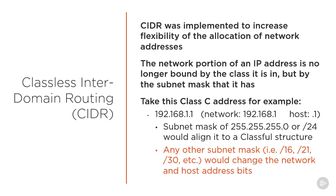Any other subnet mask, such as /16, /21, /30, or anything else, would change the portion of the IP address that is assigned to the network versus the host. For example, /16 would split it down the middle with the first two octets as network and the last two as host, with a range of 192.168.0.0 to 192.168.255.255, while a /30 would limit the range to 192.168.1.0 to 192.168.1.3.